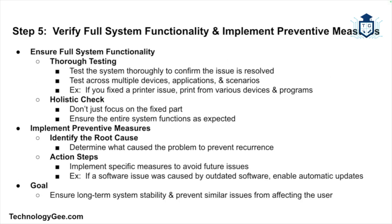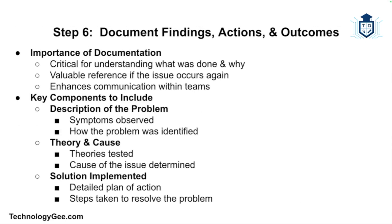Once you've implemented the solution, verify full system functionality. Make sure everything is working as expected — not just the part you fixed. Test thoroughly in multiple scenarios. For example, if you fix a printer issue, try printing from different devices and applications. Additionally, implement preventative measures to ensure the problem does not reoccur. For instance, if a software issue was due to a lack of updates, ensure automatic updates are enabled going forward.